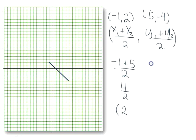For the y's, the first y-coordinate is 2, the second y-coordinate is negative 4. So I have 2 plus negative 4 over 2, which is negative 2 over 2, which is negative 1. So my y-coordinate of the midpoint is negative 1.